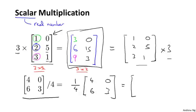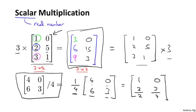The result of this product is 1 quarter times 4 is 1, 1 quarter times 0 is 0, 1 quarter times 6 is 3 halves, and 1 quarter times 3 is 3 quarters. And so that's the result of computing this matrix divided by 4.